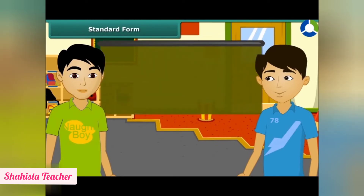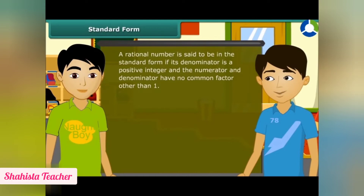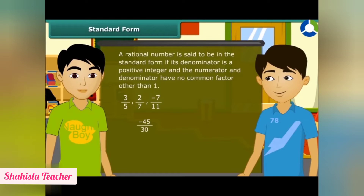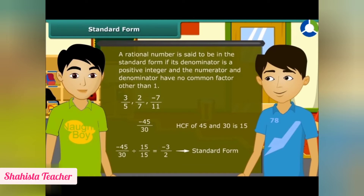A rational number is in standard form if its denominator is a positive integer and the numerator and denominator have no common factor other than 1. If a number is not in standard form, it is reduced. For example, -45/30 is not in standard form. We divide numerator and denominator by their HCF, which is 15, to get -3/2 in standard form.